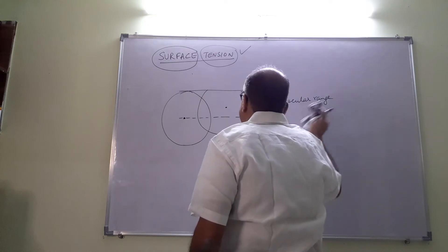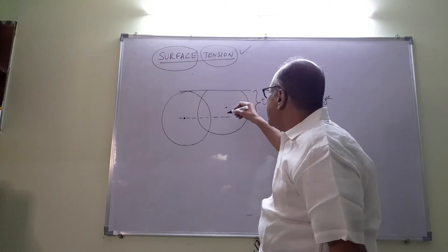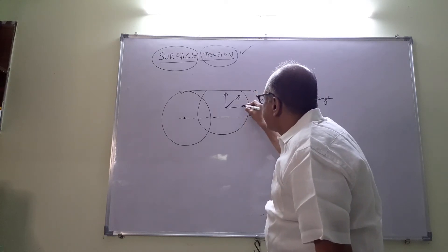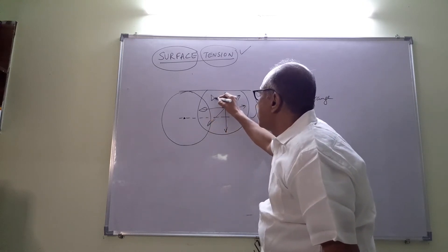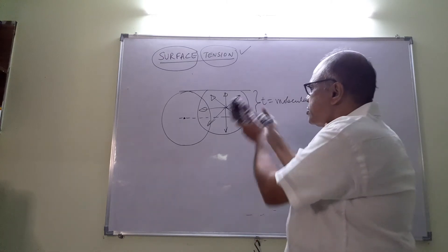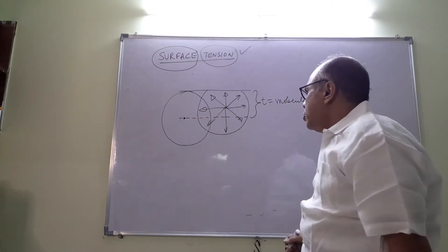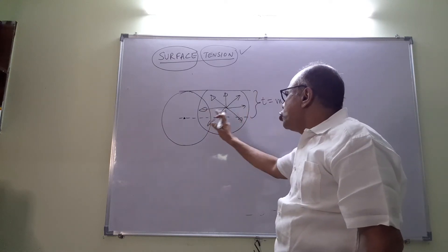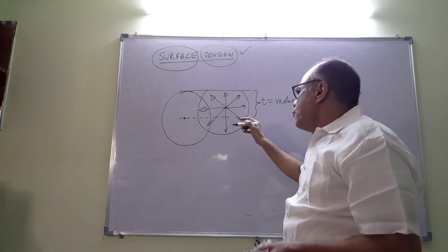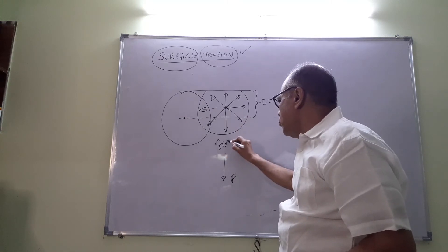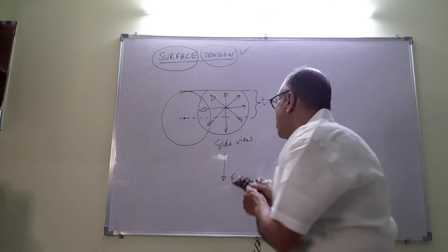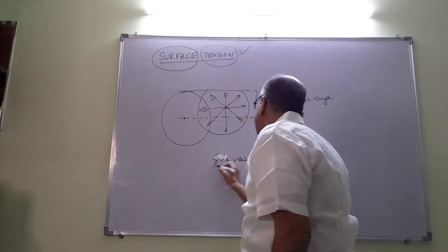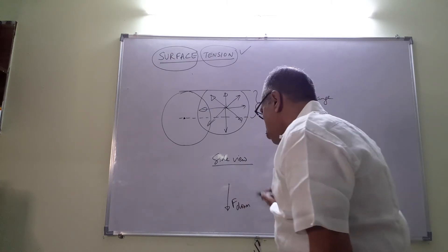Now, let us consider a particular molecule which is within the surface. I can draw forces of attraction on it. This is three-dimensional — please imagine it. Because of the spherical symmetry, there will be no net horizontal force. The net force of all these will be a downward force. So, taking a side view, the net force is downwards and there is no net horizontal force.